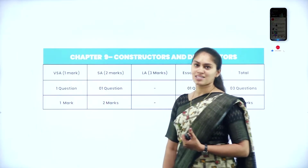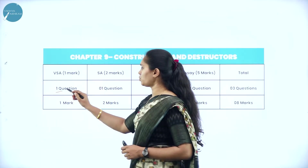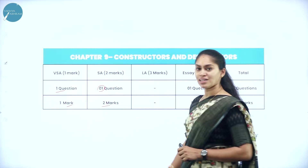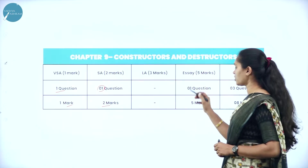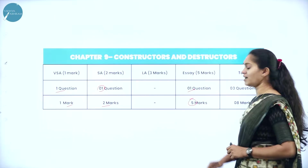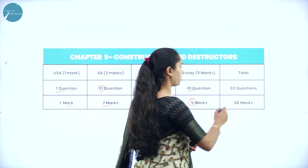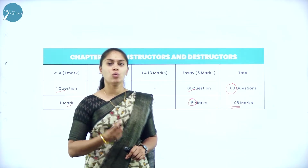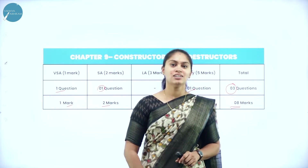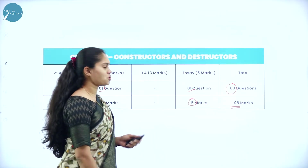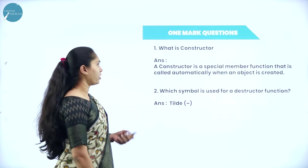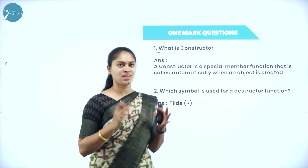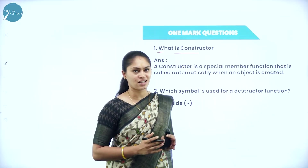The marks distribution will be as follows: you are going to get 1 question in the 1 mark, 1 question in the 2 marks, and no need to worry about the 3 mark question. You are going to get only 1 question from the 5 marks. In total, you are going to get 3 questions from this chapter for 8 marks. You need to concentrate on 1 mark, 2 mark, as well as 5 mark questions. We will see the important and most frequently asked 1 mark questions now. What is constructor?